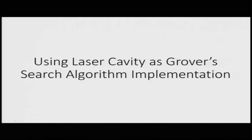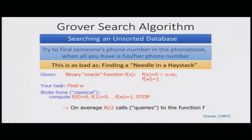This particular work is based on what Grover proposed in 1997 in his PRL, where he formulated the idea of the Grover's search algorithm, which gets the advantage when you are looking at searching an unsorted database. It is like trying to find someone's phone number in the phone book when all we have is that person's phone number — this is as bad as finding a needle in a haystack, as Grover defines it.